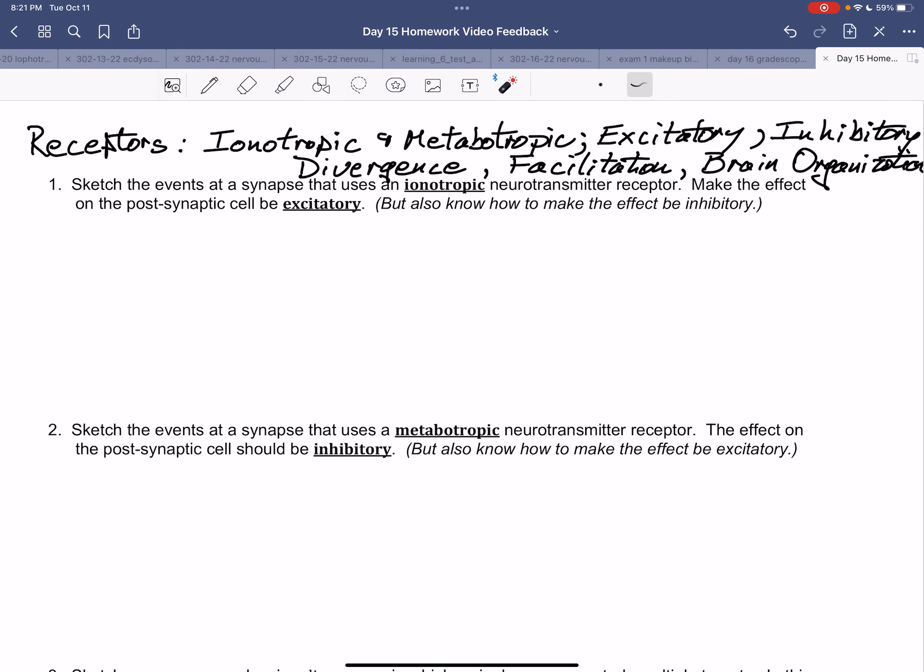For day 15 homework, we're looking at ionotropic and metabotropic receptors, which may be excitatory or inhibitory. We're also looking at divergence, facilitation, inhibition, and a little bit of brain organization.